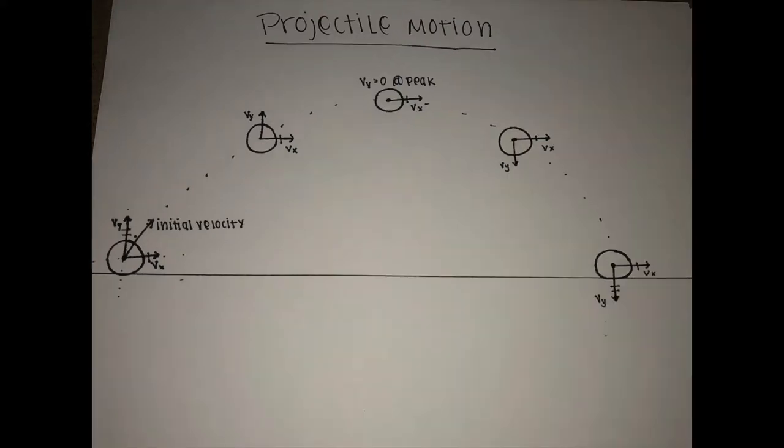The object does not accelerate horizontally because it is traveling at a constant velocity. However, the object does accelerate vertically at the rate of acceleration due to gravity, which is negative 9.8 meters per second squared.